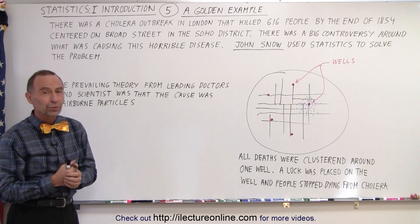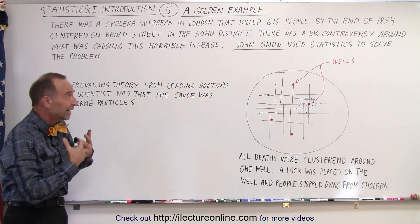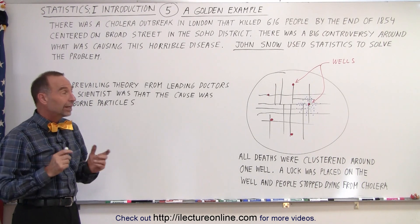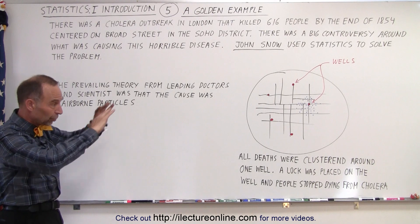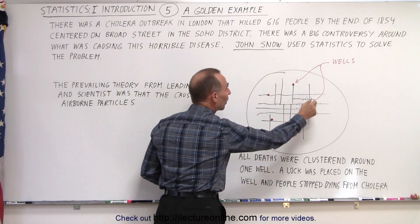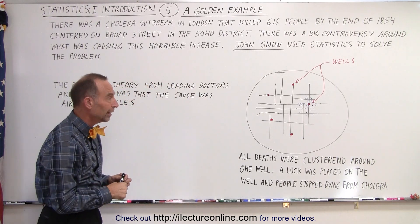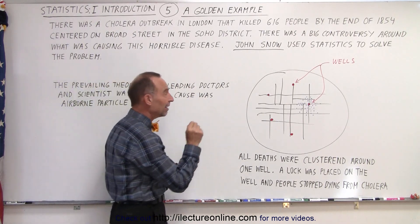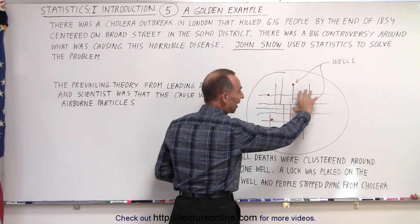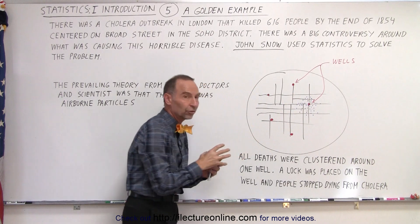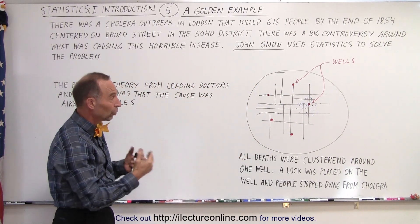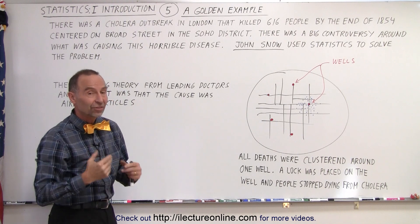But he did have an idea. He pulled out a map of London, put down all the locations where the wells were, from which people drew their water, and then put down a dot for every house where somebody had died from cholera. And sure enough, after he finished, all the deaths were clustered around a single well. He told the city: why don't you shut down the well and see what happens.